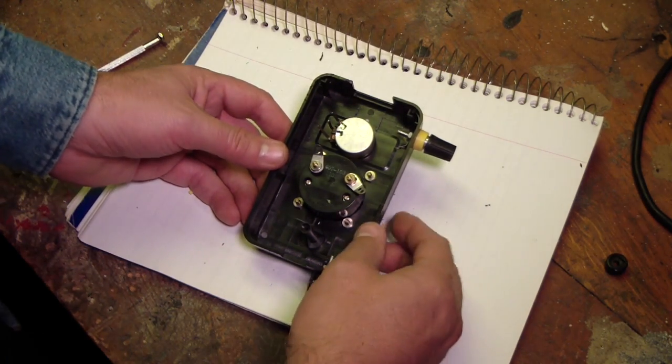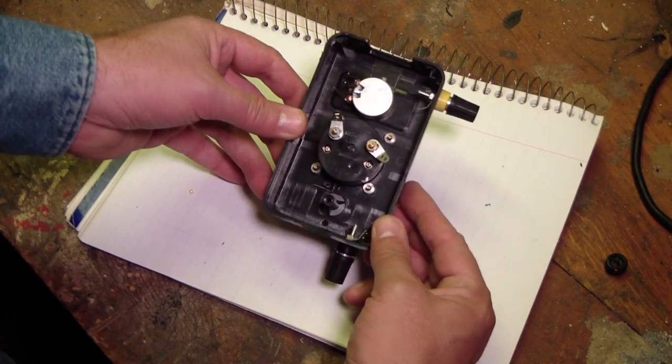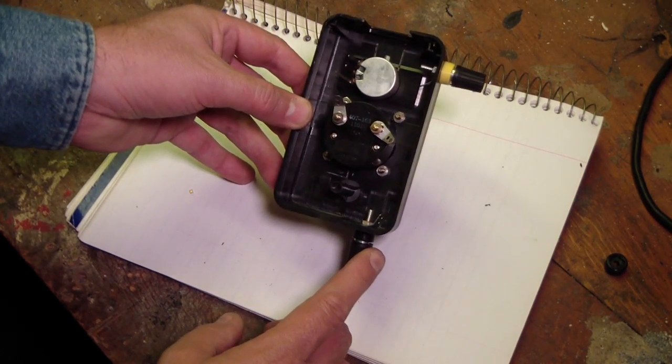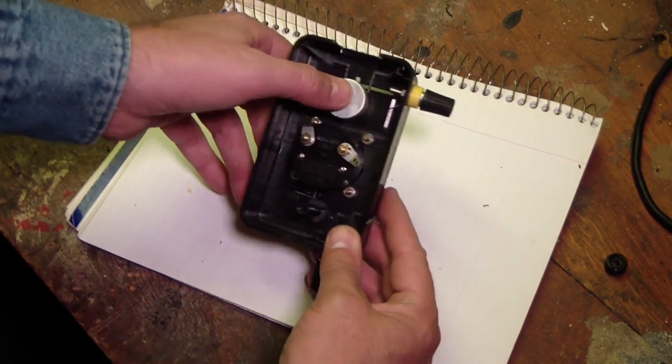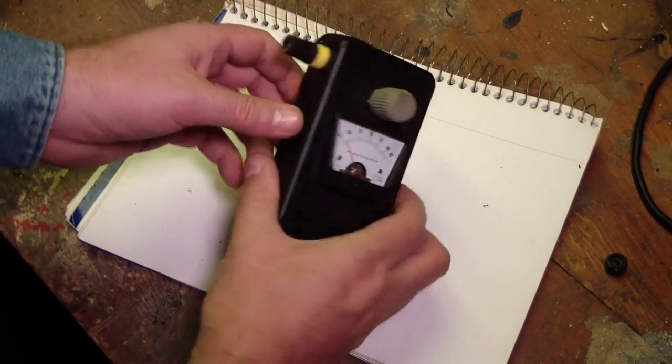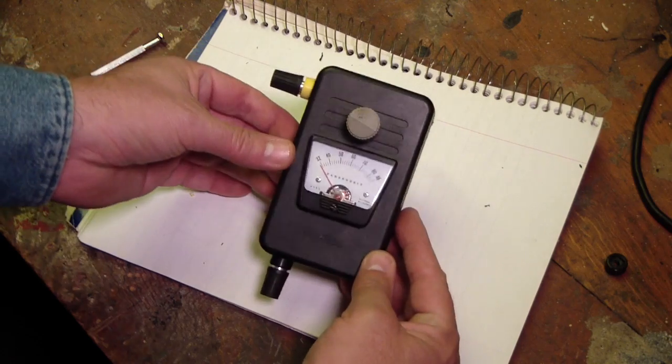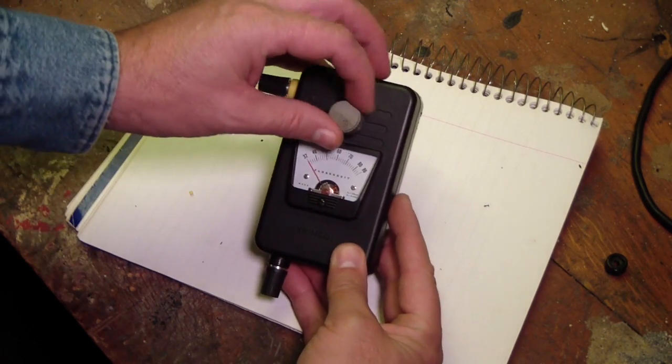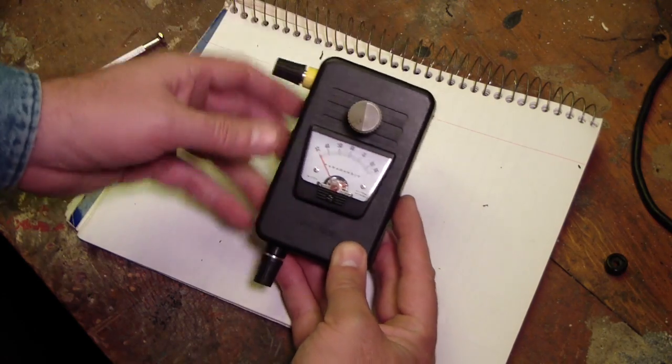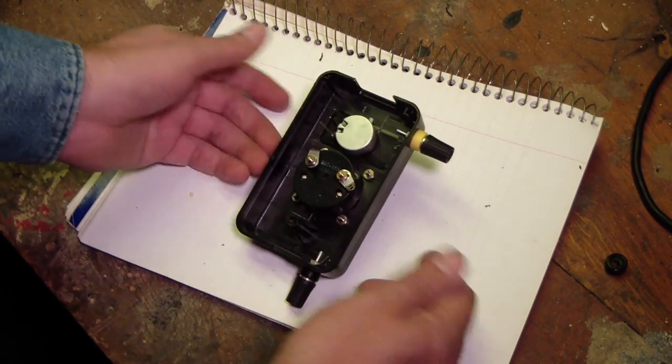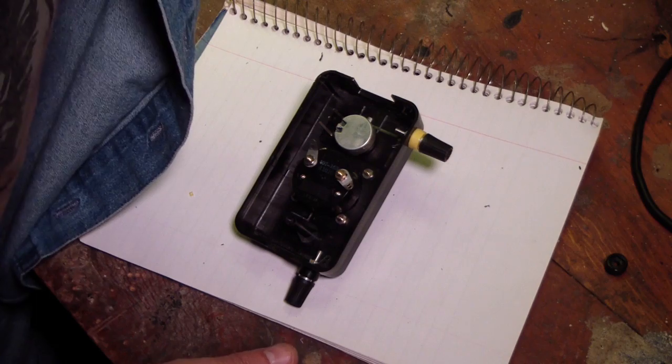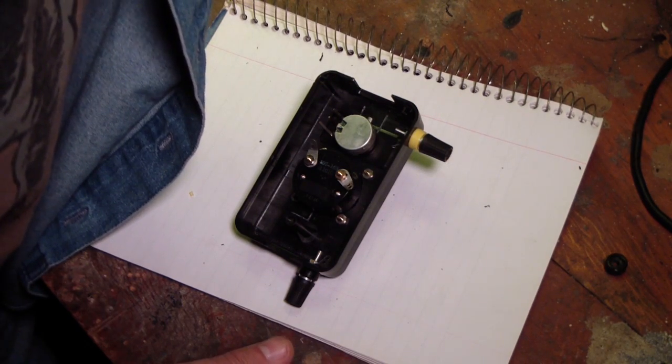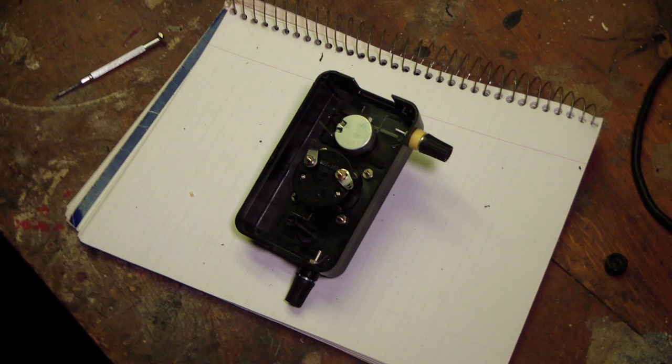Okay, so we've got all our components mounted in the enclosure. A ground terminal, antenna terminal, the pot, the meter. That's what it's going to look like right there - sensitivity adjustment. Now all we've got to do is turn on the old soldering iron and do a little bit of wiring.